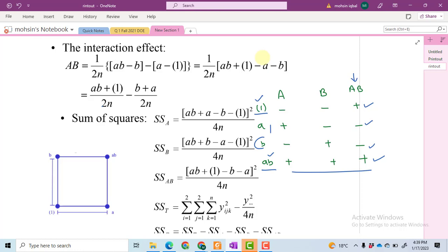After this, we will have to take the square of the contrast. For example, we have calculated this contrast AB plus 1 minus A minus B. Take the square of this contrast, after taking the square, divide by 4 and then multiply by N. So we will get sum of squares of AB.